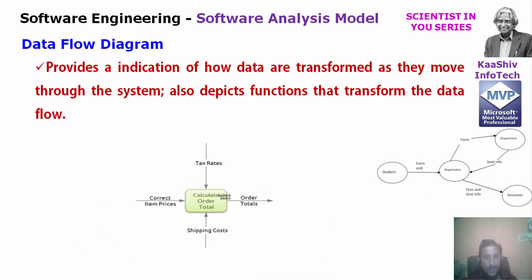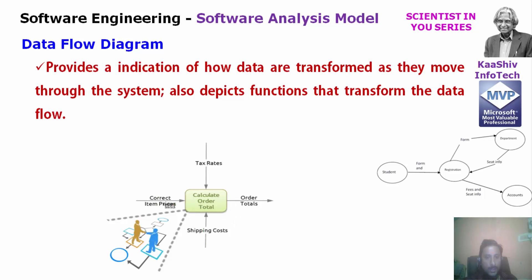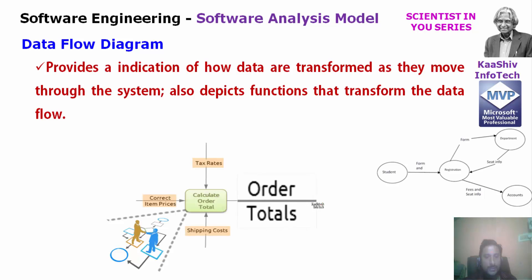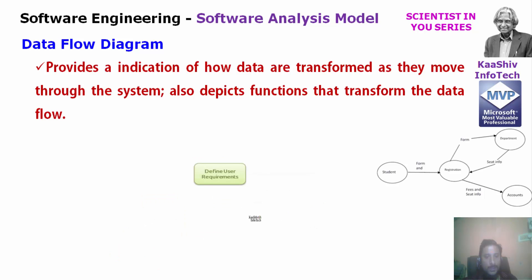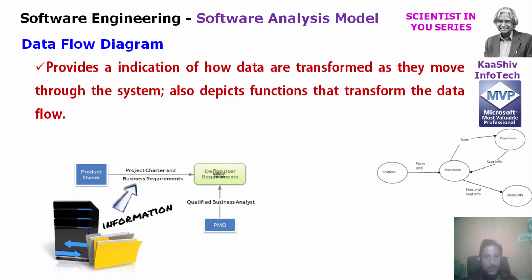Another example of a data flow diagram: you can calculate the tax rate. The inputs are item orders, shipping cost, and tax rate, and the output is the order total — you calculate it. There is also a product owner who defines user requirements, and a management officer who handles the information. This shows how data moves through the system.